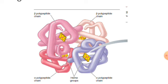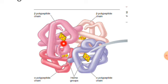When the first molecule of globin binds to oxygen, it will cause a change in its configuration. By this, it will expose more binding sites for oxygen. So the affinity of the second, third, and fourth molecules will increase their affinity for oxygen.